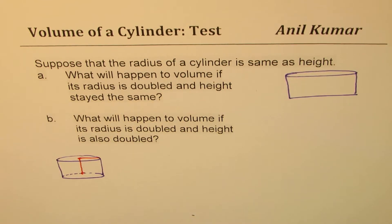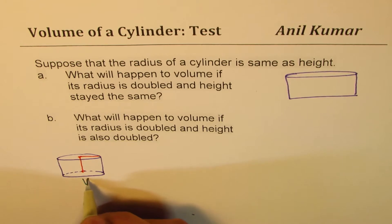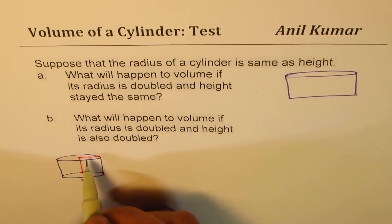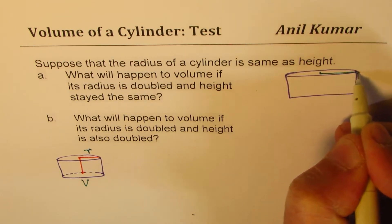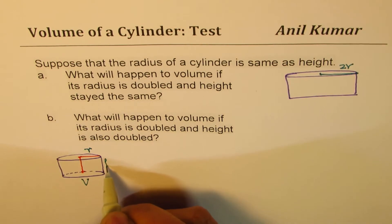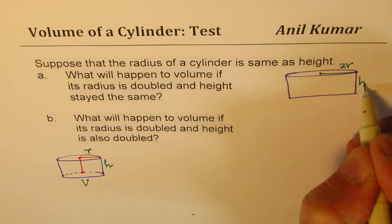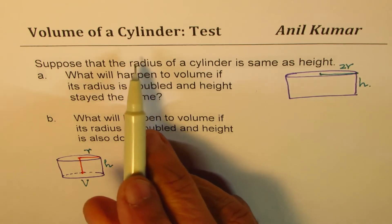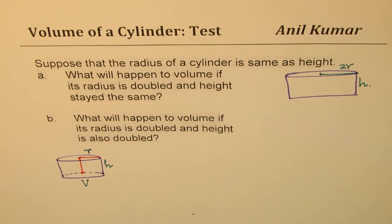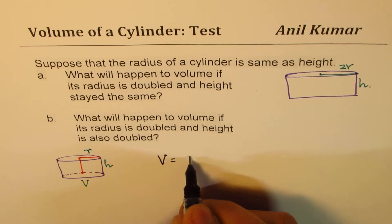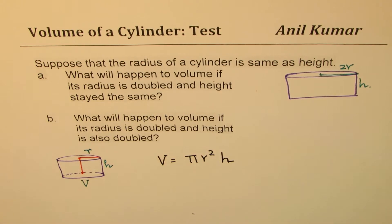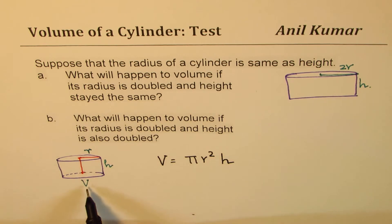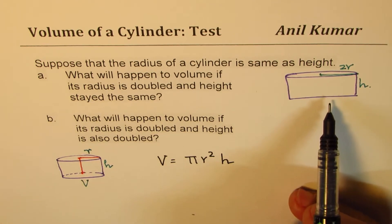Let us say that the volume of this is V. So this is radius R. Now here the radius is 2R — twice R, 2 times R — and height is H. Now let me also give you the formula for the volume of a cylinder. The volume cylinder formula is V equals pi R squared H. That is the formula for volume. If I double the radius, what will happen to volume? Can you write down the new volume?